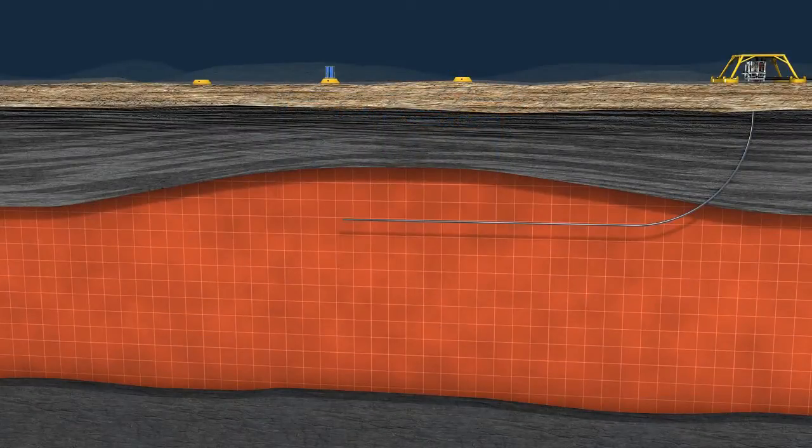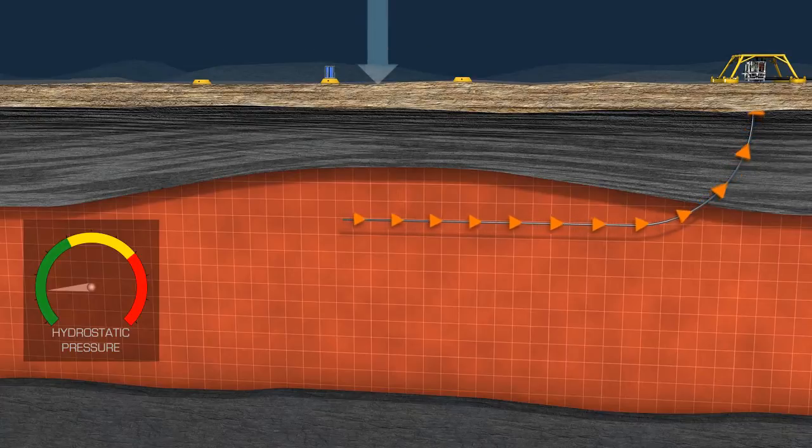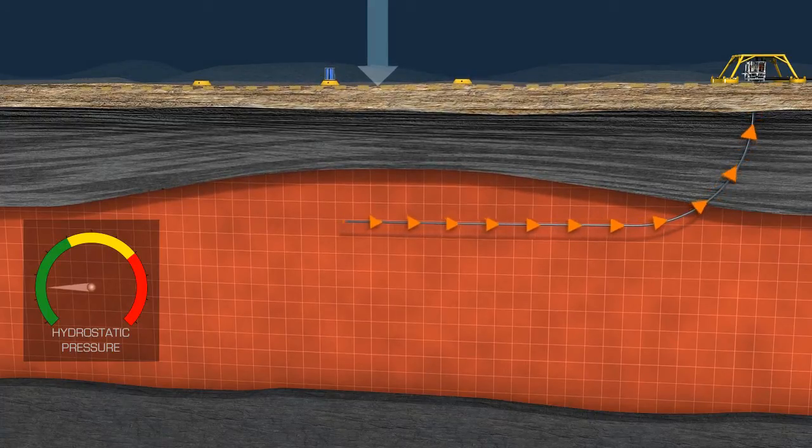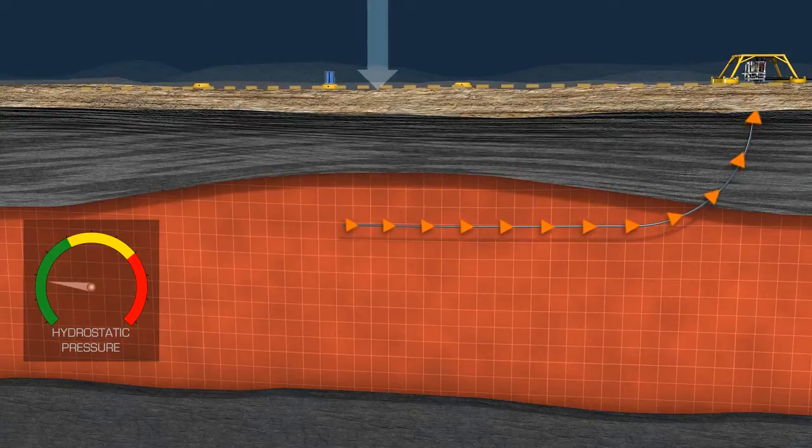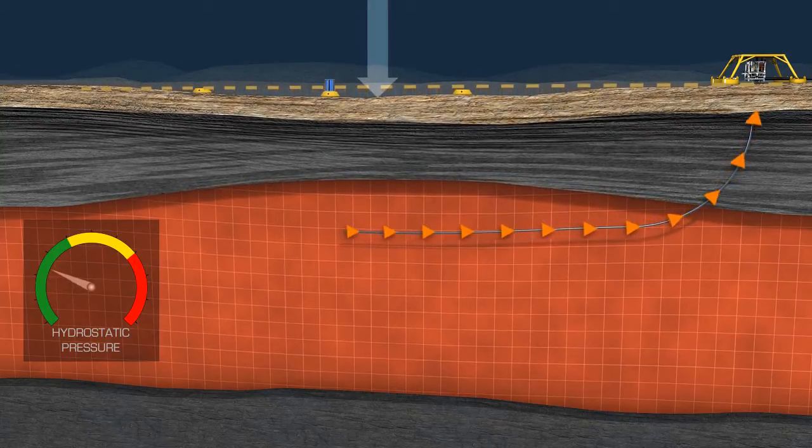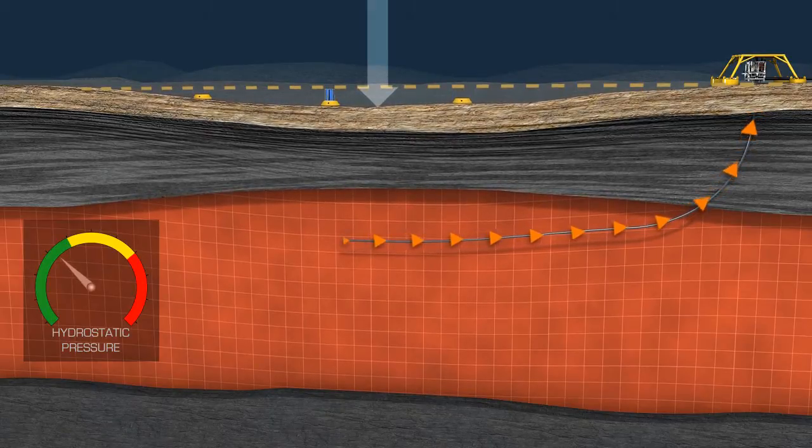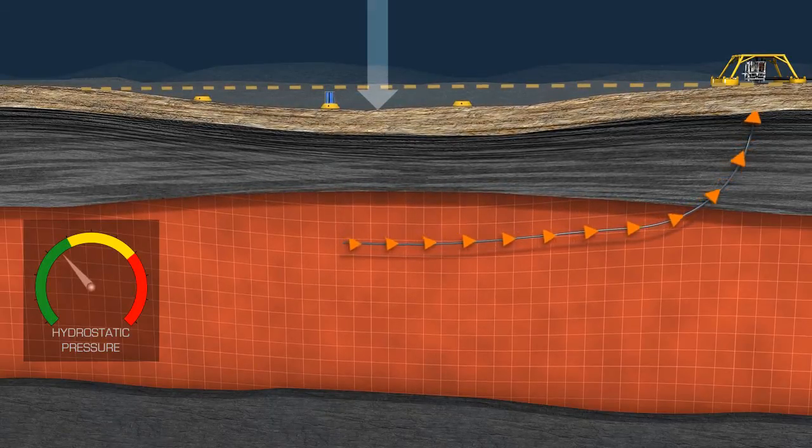In addition to measuring gravity, the gravimeter also accurately measures water pressure. By combining this measurement with tidal data, the seabed depth can be calculated to millimeter accuracy. Repeat surveys and measurements both inside and outside the reservoir perimeter establish an overview of subsidence in the area and allow reservoir compaction to be estimated.